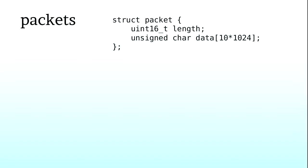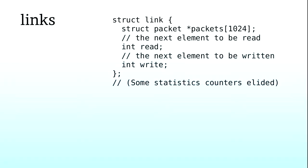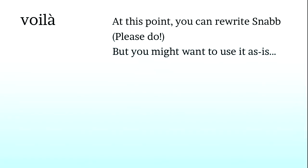This pointer goes to the middle of a region — if we want to prepend data onto a packet, we move the pointer and fill in the data so we don't have to copy as much. What's a link? It's just a ring buffer with a static limit on how big it is. These connect apps inside your network function. If you try to push more than 1024 packets, it'll just drop them. There are counters for bytes transmitted, packets dropped, and so on. Otherwise it's simply a ring buffer — that's all there is. So you can go and rewrite Snabb right now.